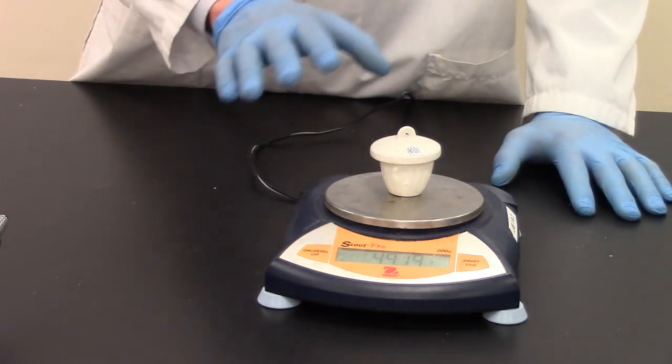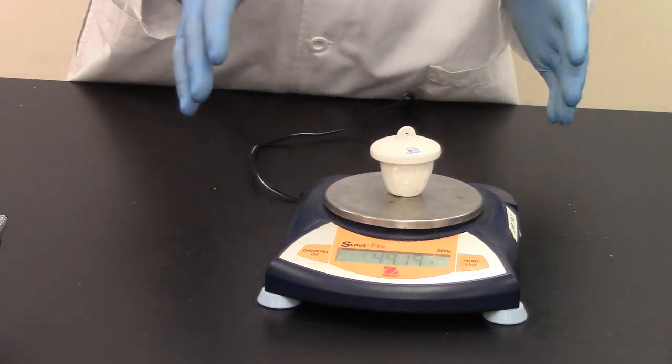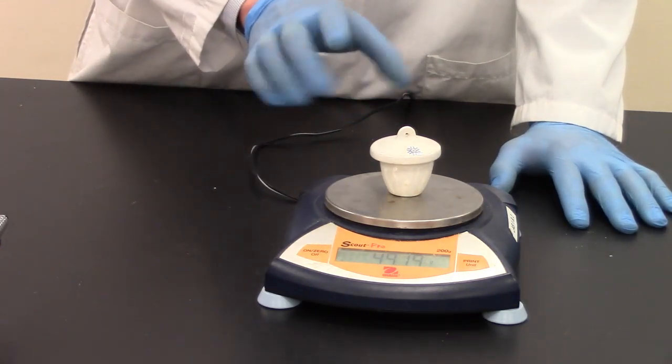So we have a mass of our reactant, the sodium bicarbonate, and the crucible. We have a mass of the empty crucible. You should be able to isolate just the sodium bicarbonate by itself.